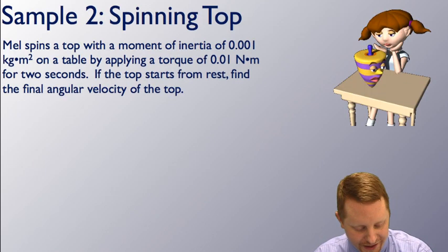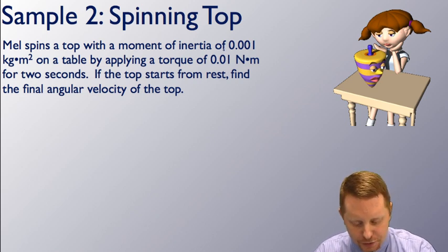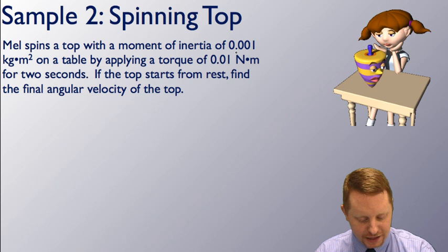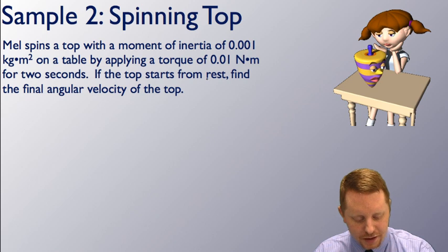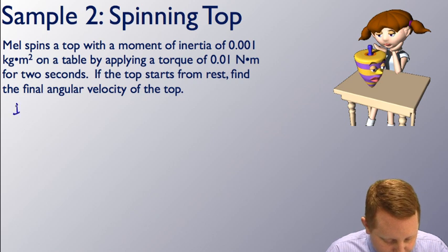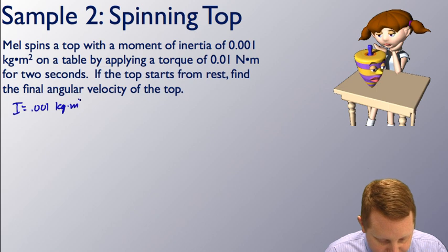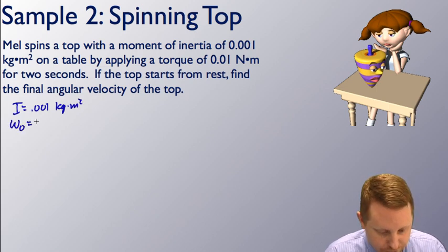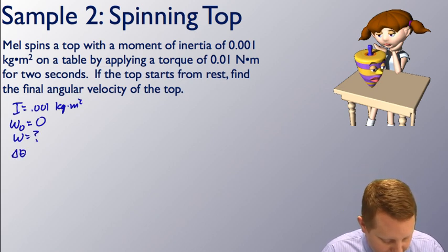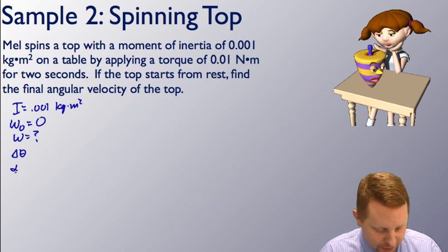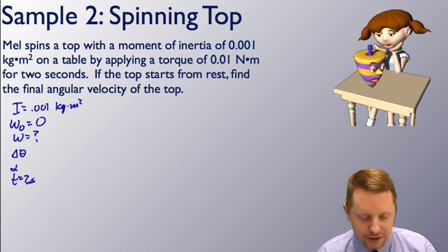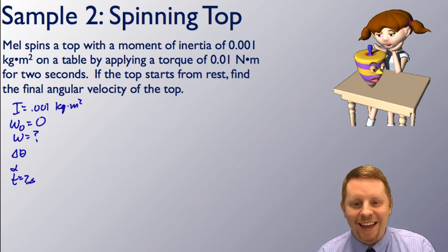Let's do an example. Mel spins a top with a moment of inertia of 0.001 kilogram meters squared on a table by applying a torque of 0.01 newton meters for 2 seconds. If the top starts from rest, find the final angular velocity. The moment of inertia is 0.001 kilogram meters squared, initial rotational velocity is 0, and the time is 2 seconds. Let's start by finding the angular acceleration.